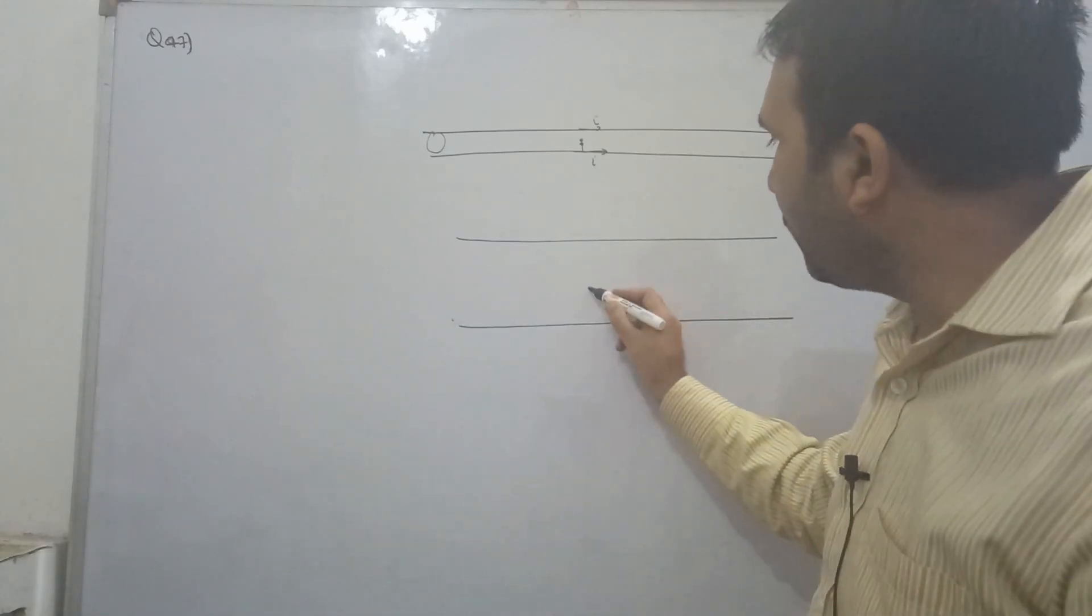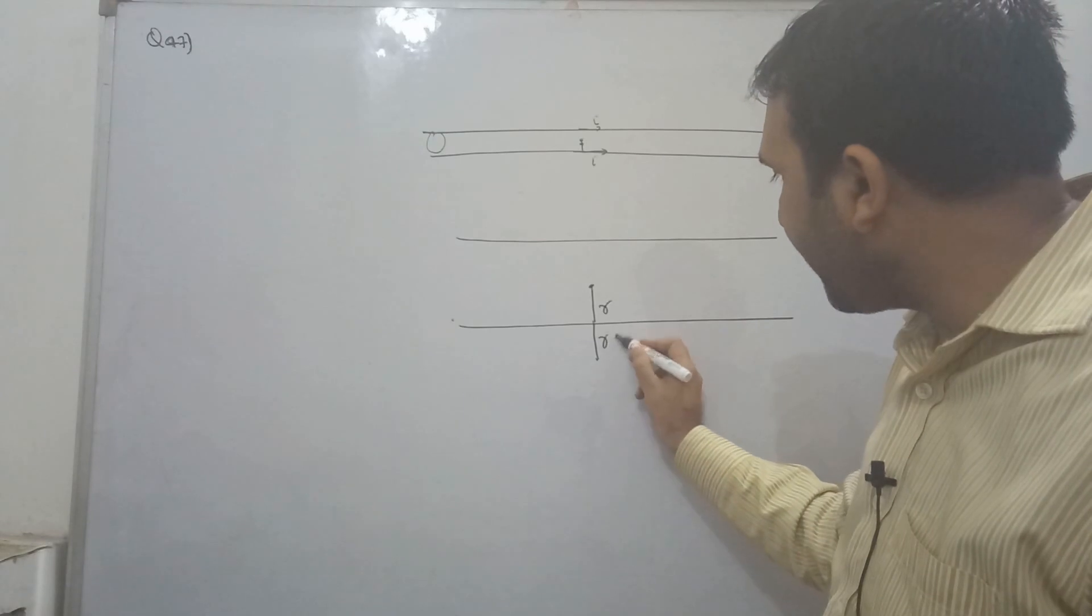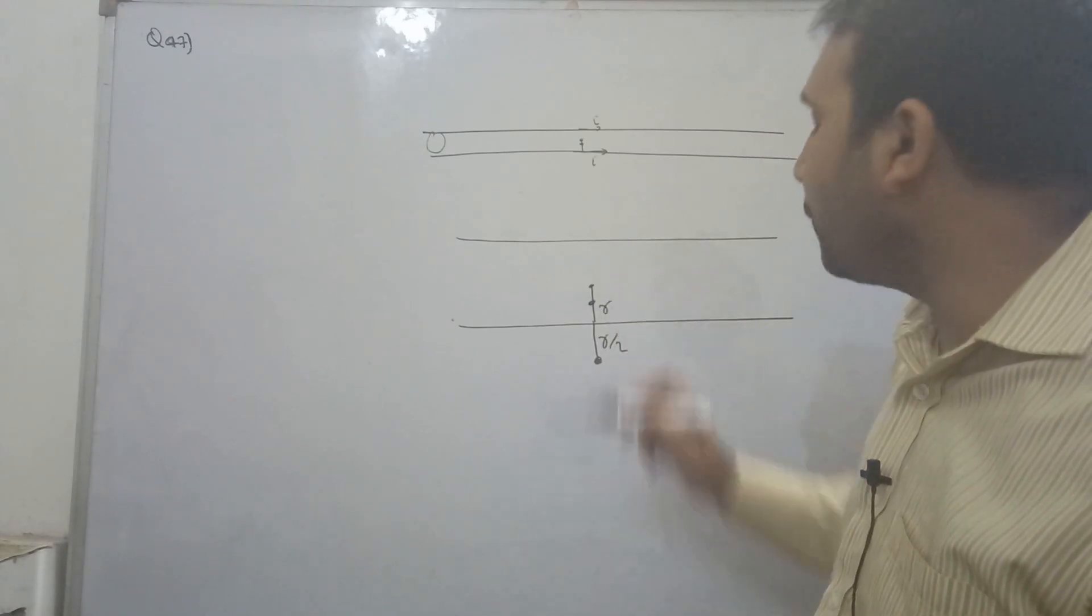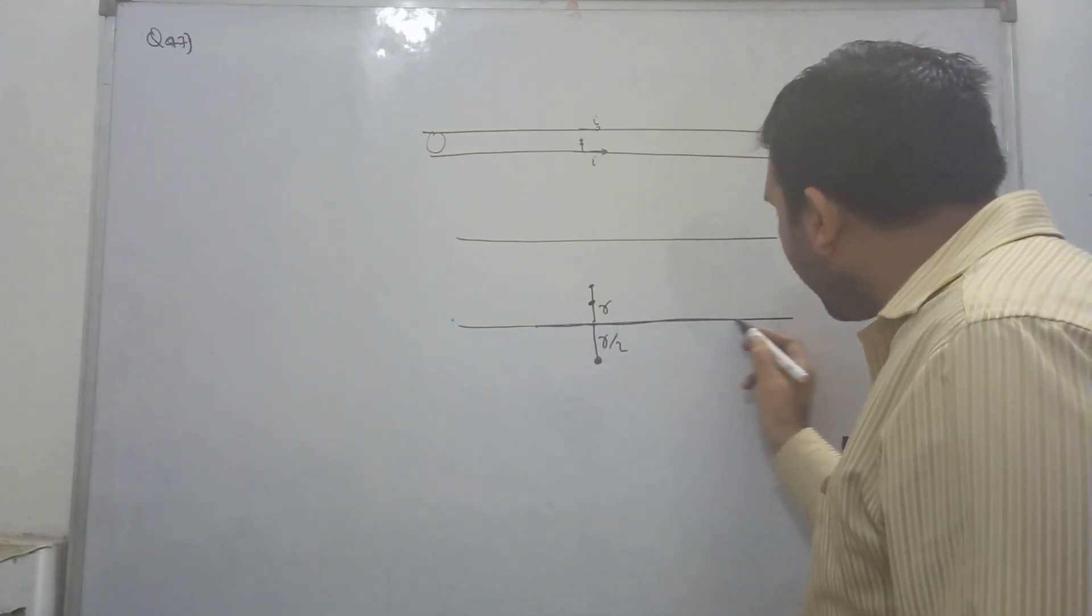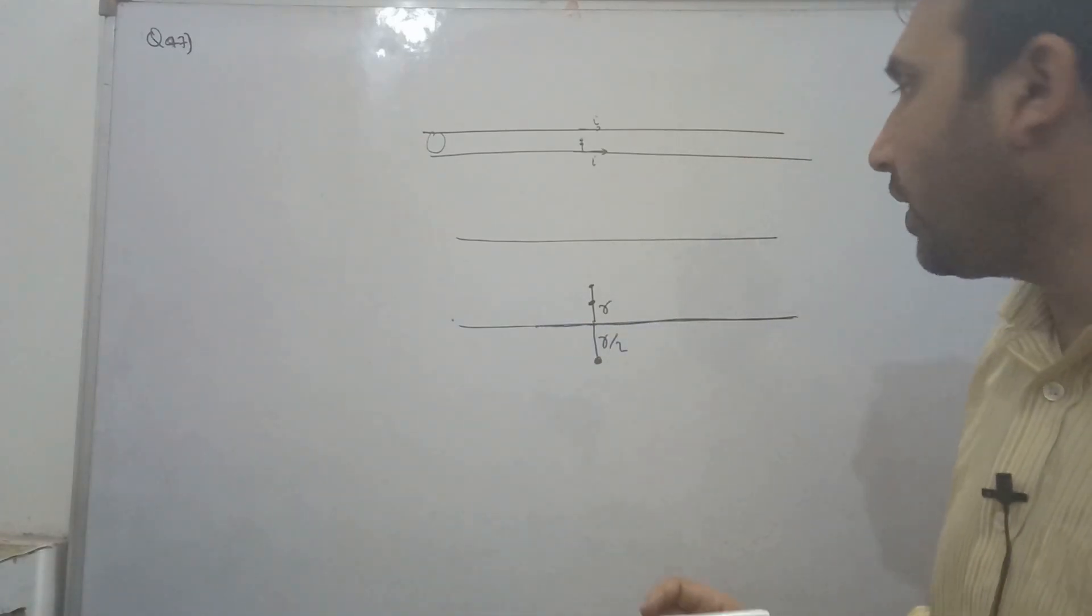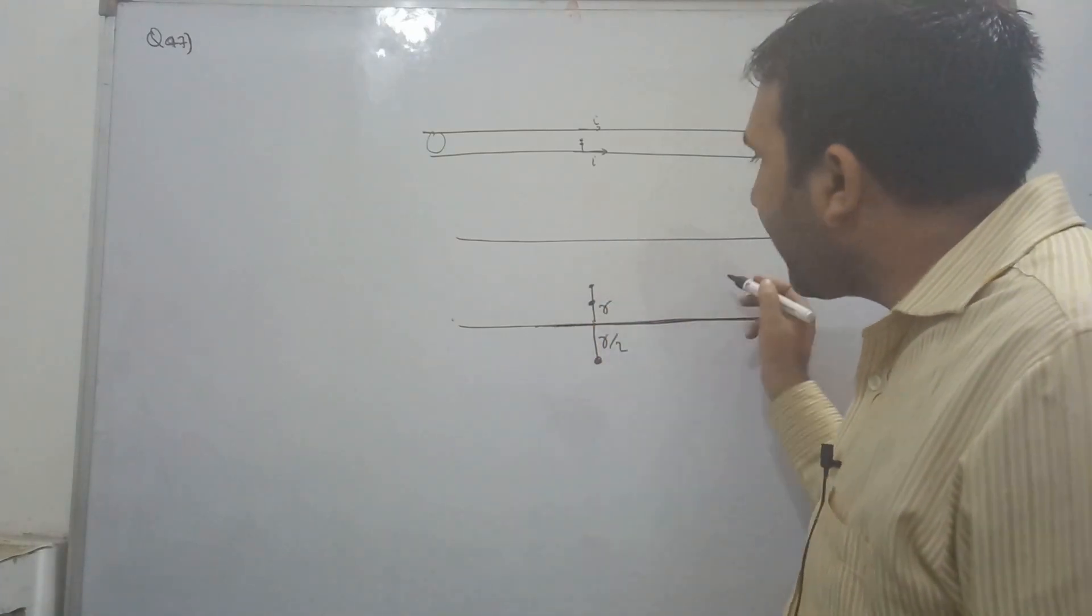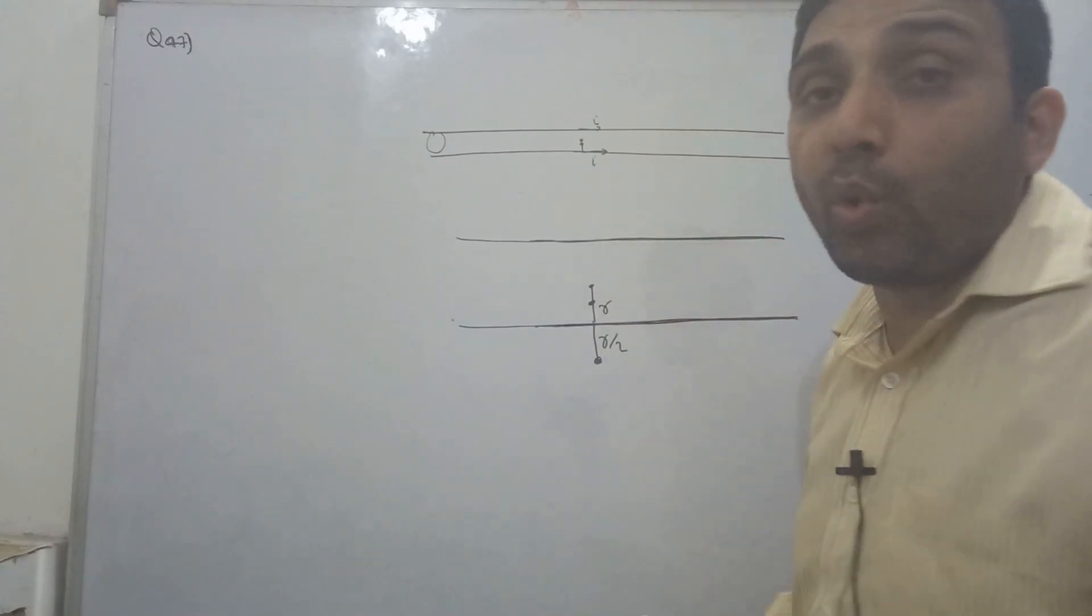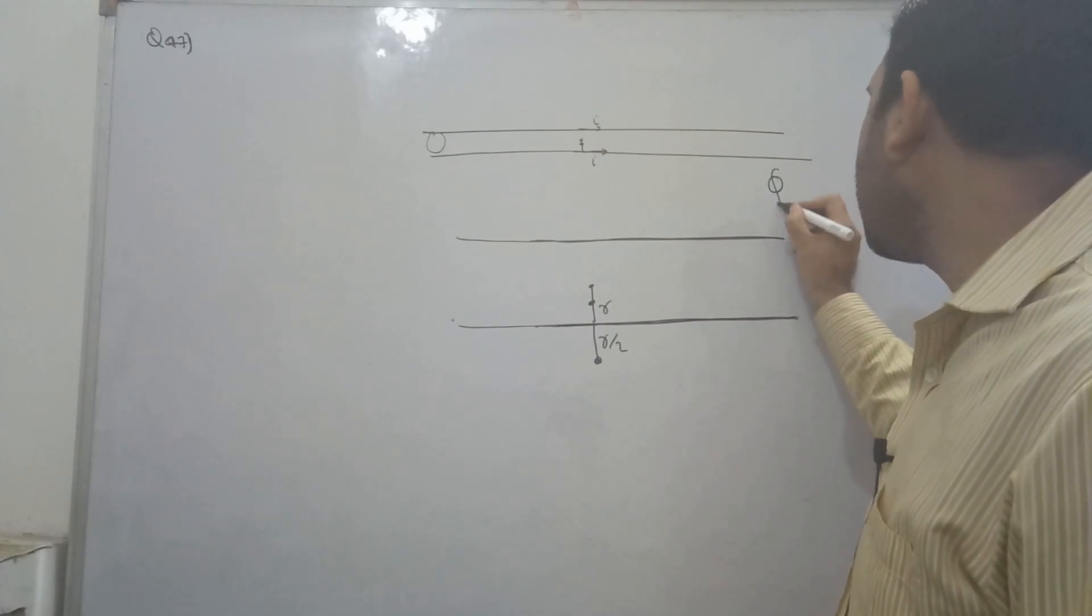So this is r radius. They are asking for r by 2 distance inside and outside. It's like a conducting tube with current flowing along the length. It's hollow, and the current flows along the length. Now basically we'll apply Ampere's law, guys.